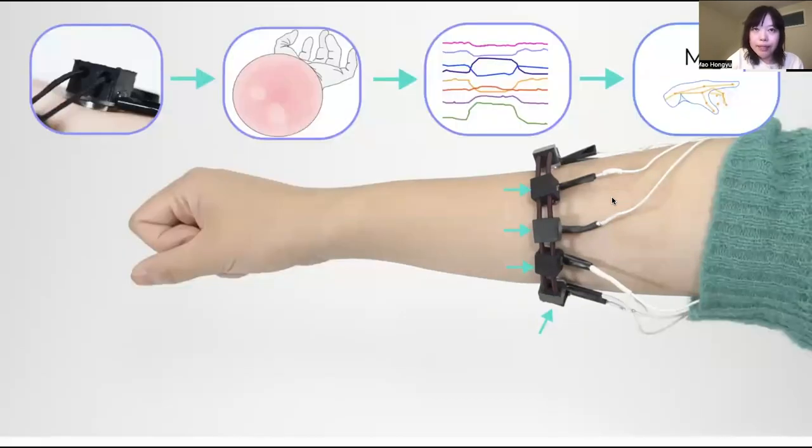When we apply the sensing principle into hand pose detection, through attaching the electrodes on the user's forearm, we will be able to monitor the internal tissue changes when the user is doing the hand pose. And through feeding those data into machine learning pipeline, we will be able to predict the hand pose labeling.